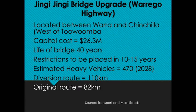To demonstrate Approaches A and B, we'll look at some case studies. The first is the Jiggy Jiggy Bridge upgrade, located along the Warragur Highway, demonstrating Approach A. The project is located between Warragur and Chinchilla, just west of Toowoomba. The capital cost was $26.3 million, the new bridge has a life of 40 years, restrictions on the old bridge are expected in 10 to 15 years, and the estimated heavy vehicle count in 2028 is 470. The diversion route is 110 kilometres; the existing route is 82 kilometres.